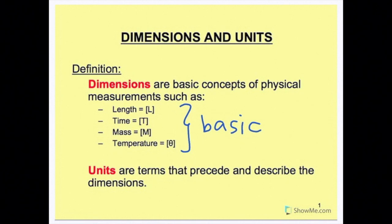The definition of units is terms that precede and describe the dimensions. If we have the dimension and unit combo of 25 centimeters, the unit centimeter precedes or follows the dimension length or the number 25, and centimeter describes the dimension or length of 25.